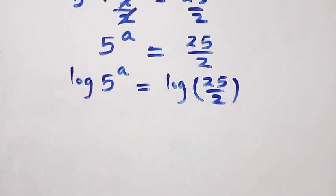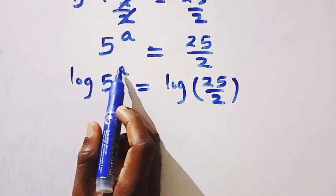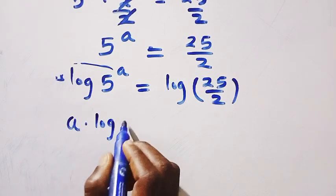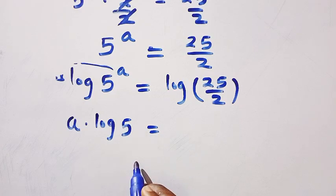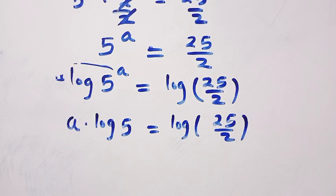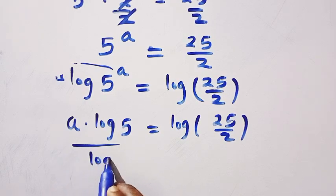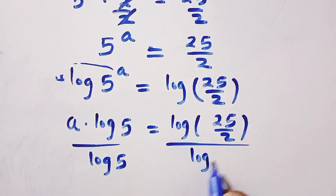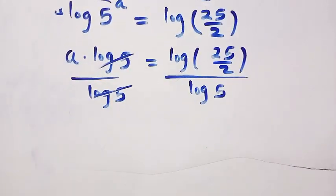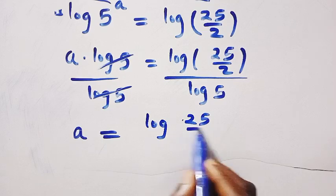We have a rule of logarithm: if you have a power at this point, we take the exponent a and bring it in front. Then it becomes a multiplied by log 5 equals log 25 divided by 2. Since we need to get a, we divide both sides by log 5. So log 5 cancels log 5, and we have a equals log(25/2) divided by log 5.